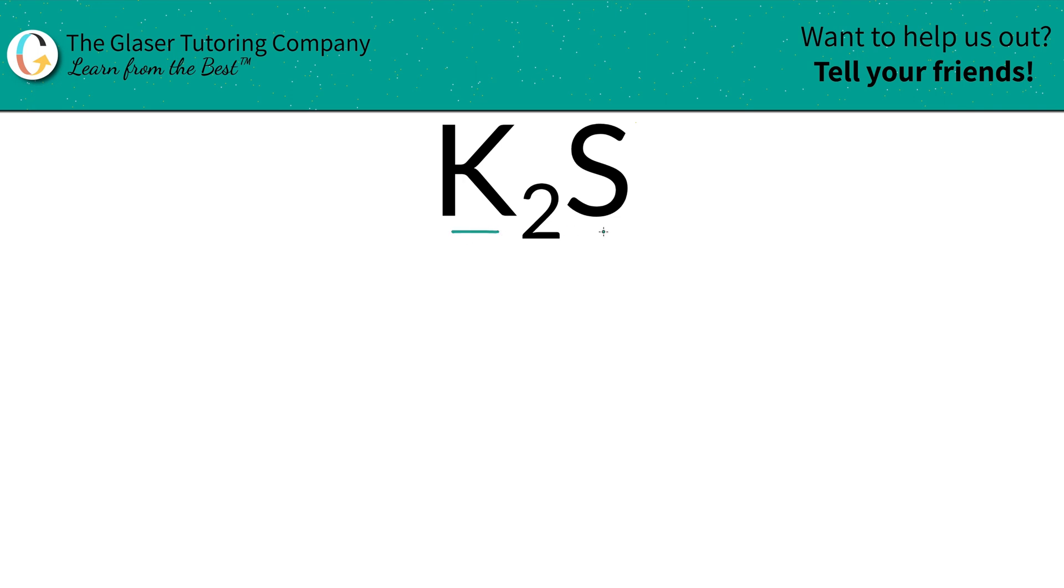So how do we find the mass percent of potassium and sulfur inside of potassium sulfide? Well, it's a very simple process. There's two main steps: first we're going to find the total mass, and then we're going to find those percents.